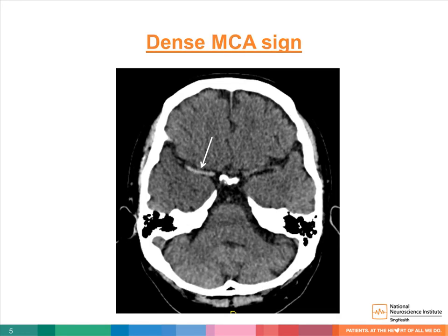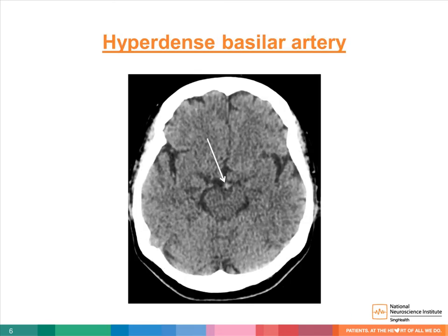In the event of an acute ischemic stroke, you can sometimes see a dense MCA sign. In this example, there is a dense right middle cerebral artery. In this example, there is a hyperdense basilar artery.